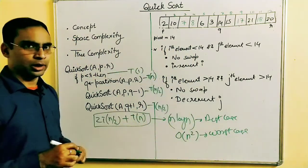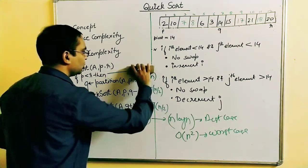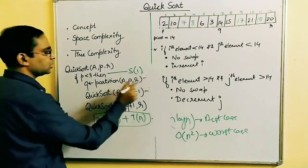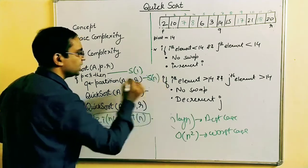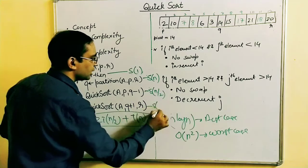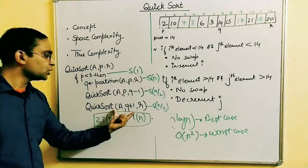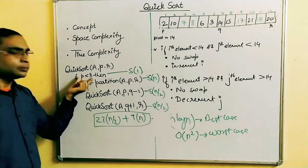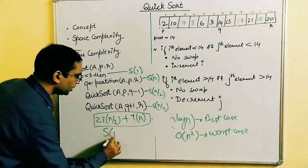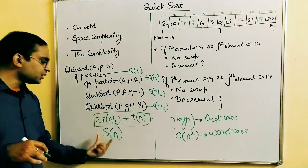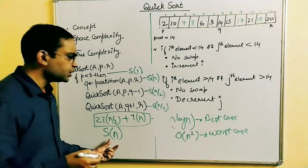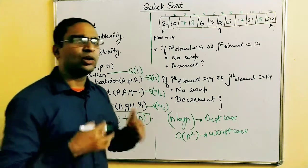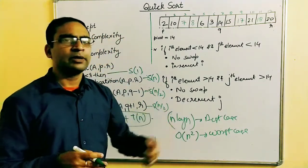Now for space complexity: the comparison takes O(1) space; the partition requires N positions so it is S(N); the two recursive QuickSort calls each require N/2 elements. Overall, the space complexity of QuickSort comes to O(N). In summary, QuickSort has space complexity O(N), best-case time complexity O(N log N), and worst-case time complexity O(N²). We'll be covering HeapSort and more sorting algorithms in the coming lessons.